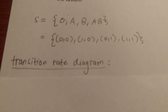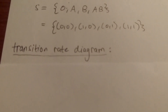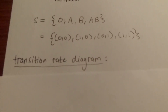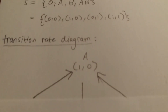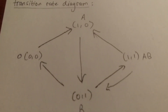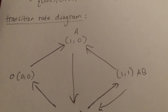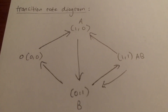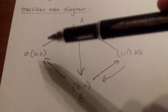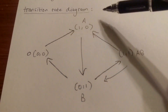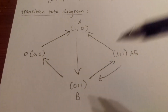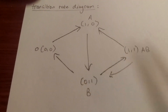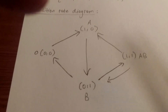Our next step is to draw the transition rate diagram. We have four states — (0,0), A, B, and AB — with arrows between them.